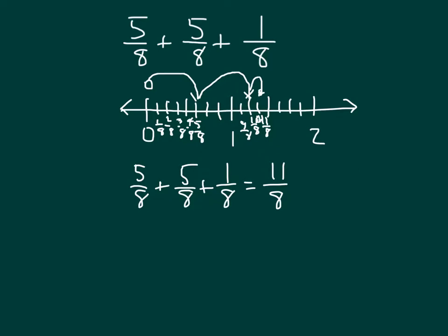So the addition sentence is 5 eighths plus 5 eighths plus 1 eighth equals 11 eighths. How many units of 8 eighths do we see? We see 1 unit — 1 whole equals 8 eighths. There's 1 unit of 8 eighths, and then 1, 2, 3 more eighths. So 11 eighths is really 8 eighths plus 3 eighths, and since 8 eighths equals 1, we have 1 plus 3 eighths, or as a mixed number, 1 and 3 eighths.